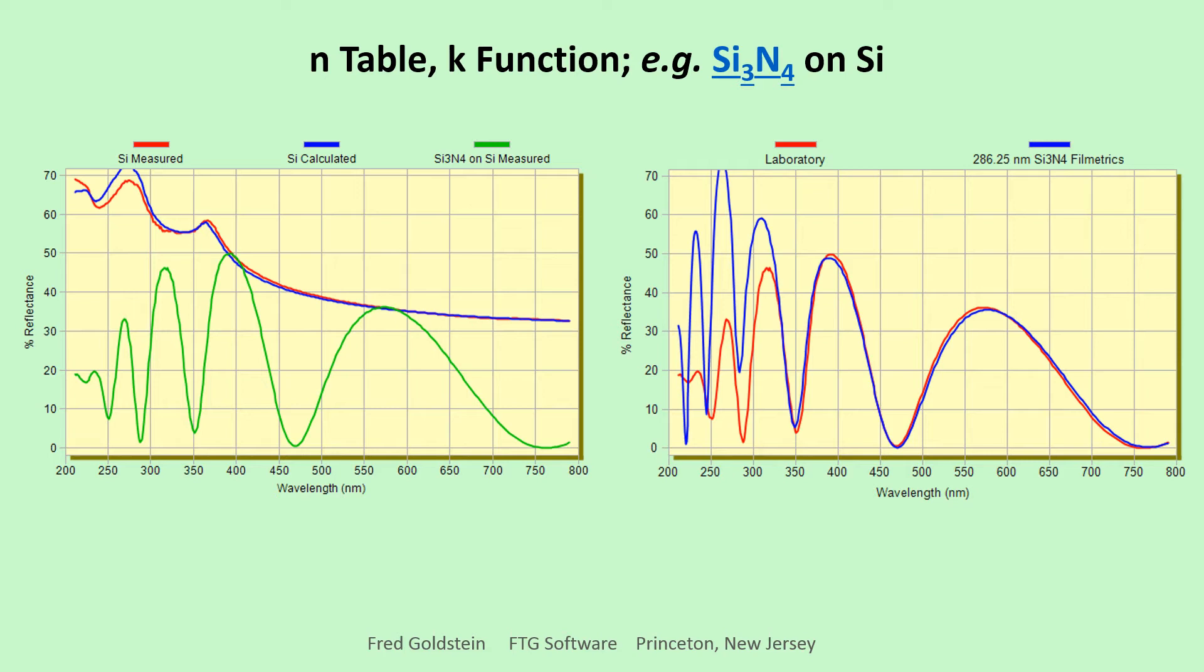We next downloaded Si3N4 dispersion tables from refractiveindex.info and from the filmetric website. Referring to the right-hand image, the laboratory spectrum, now the red trace, is compared to the calculated spectrum utilizing filmetric N and K. Noting the coincidence of peaks and valley positions, we deduce that filmetric N values are reasonable and K is much less than N.